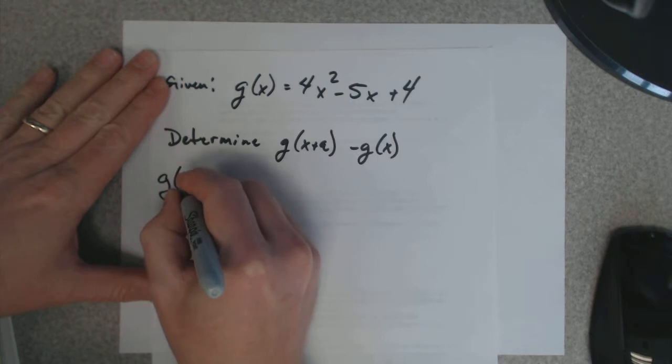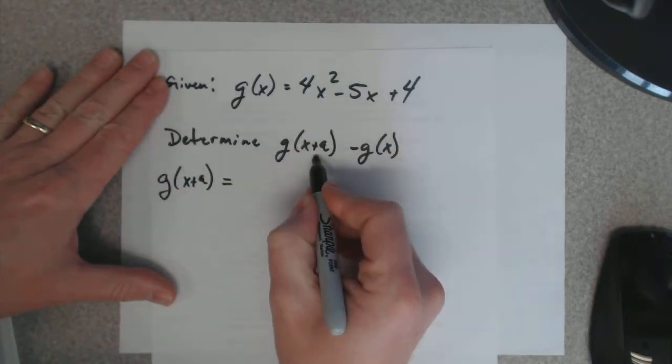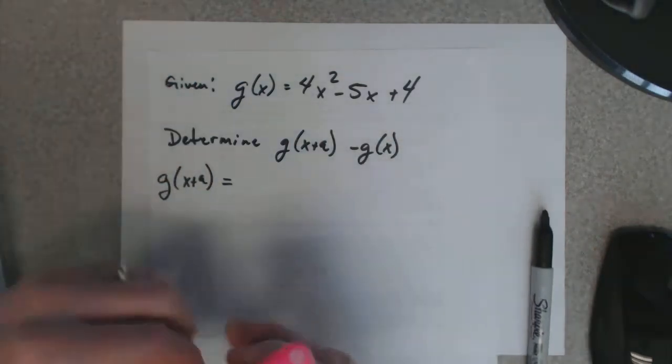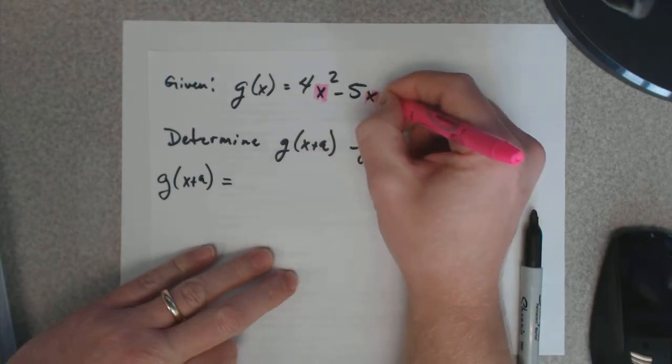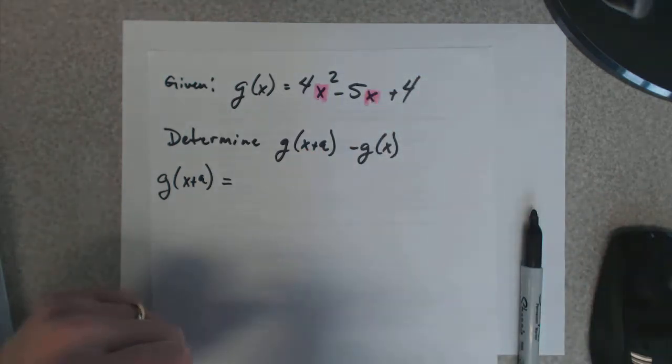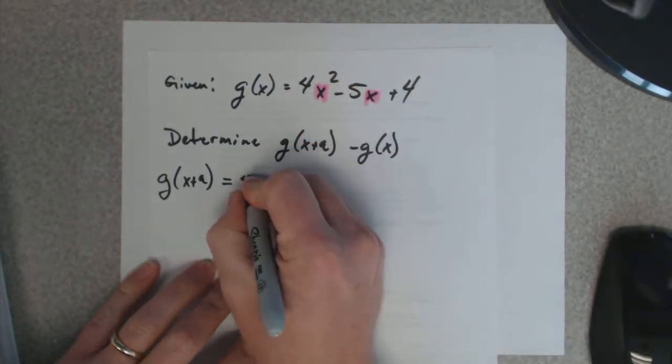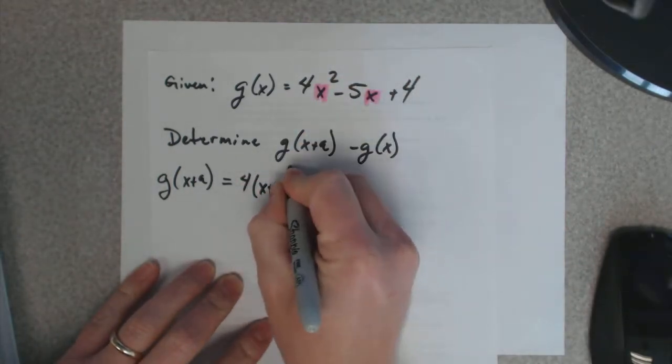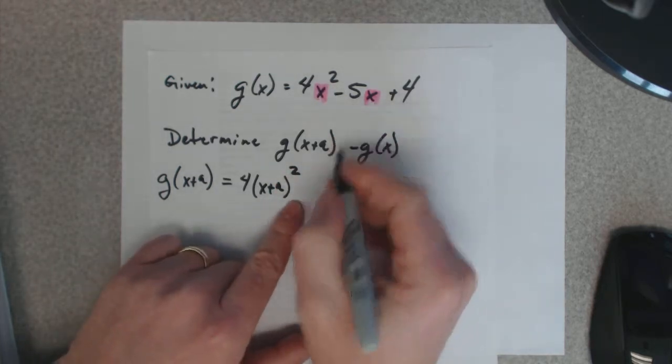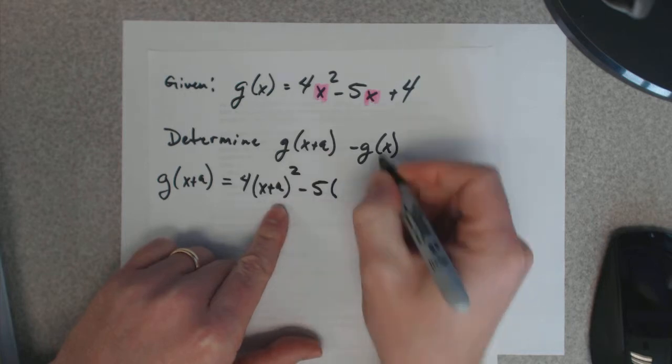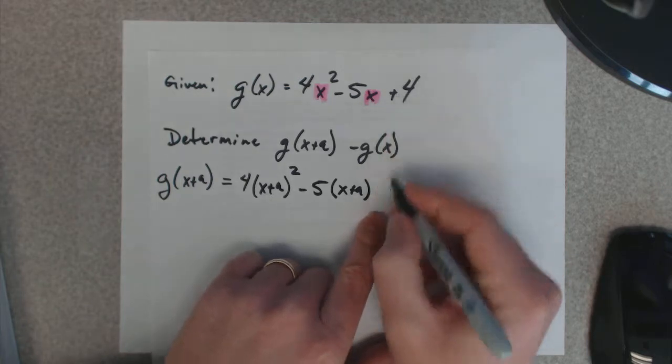First, I need to find g of x plus a. Everywhere I see an x, it becomes an x plus a. See this x right here? He's going to become an x plus a. And this x right here, he's going to become an x plus a. So, 4 times x plus a squared, because there's a squared up here in the original function g, minus 5 times x, so it becomes x plus a, plus 4.